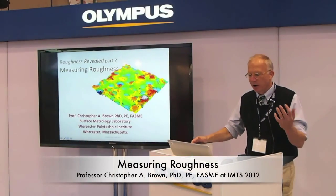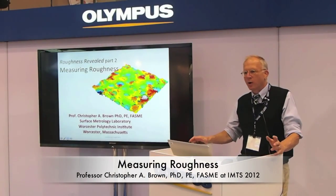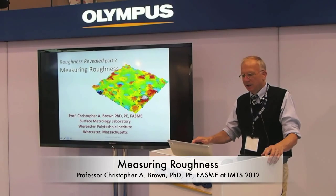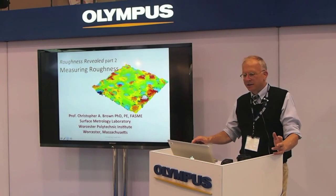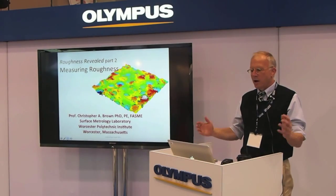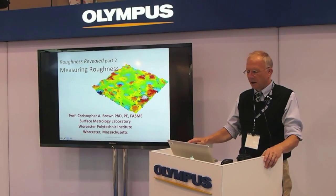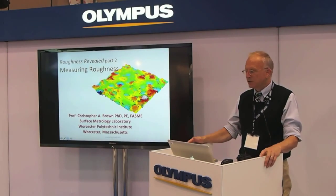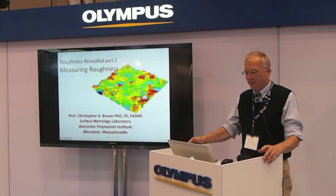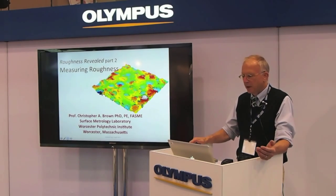In the first part of this three-part series, we were talking about what roughness is — getting the idea that it can be specced on a print in a certain way, it can be manufactured in a certain way, and then how do we measure it?